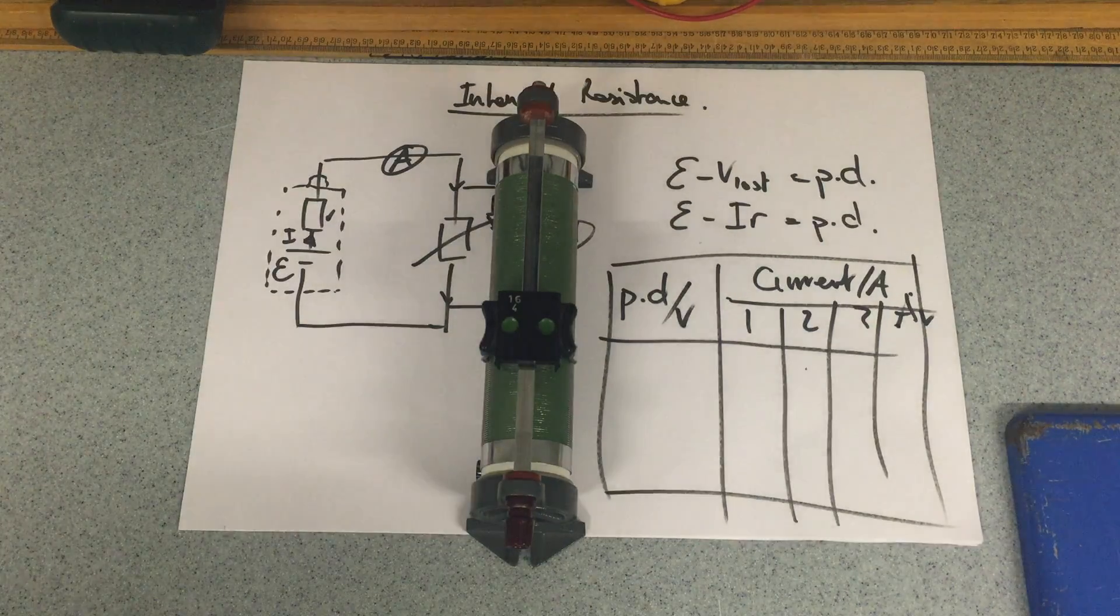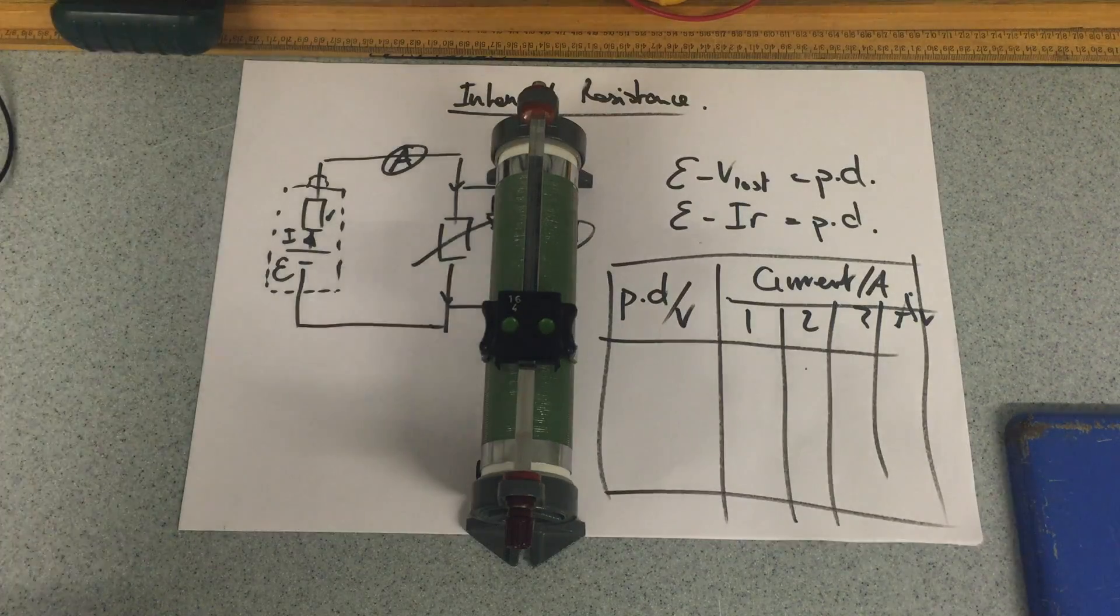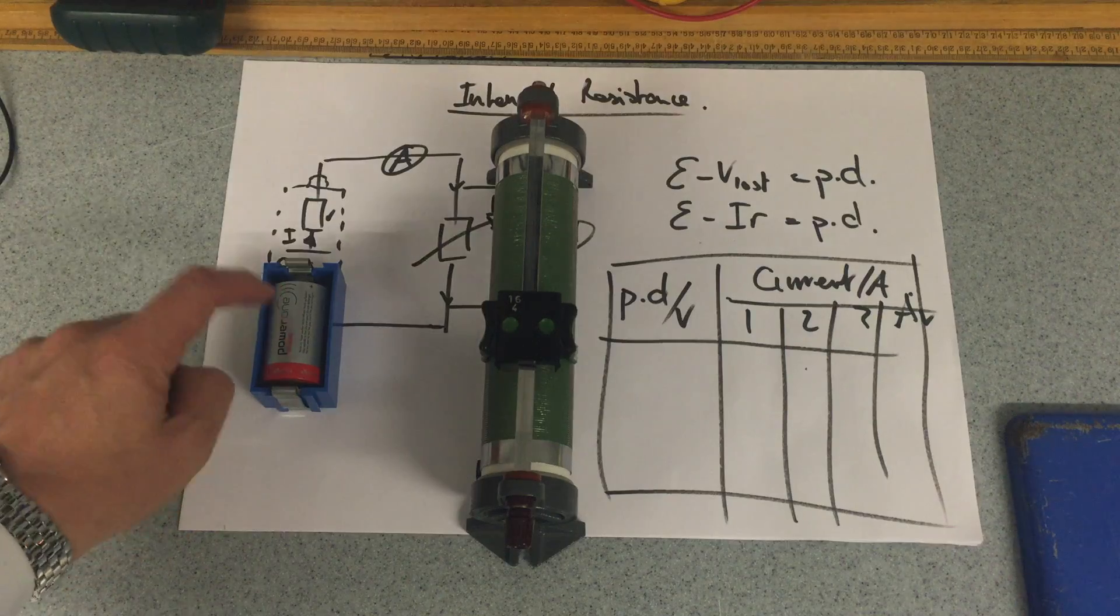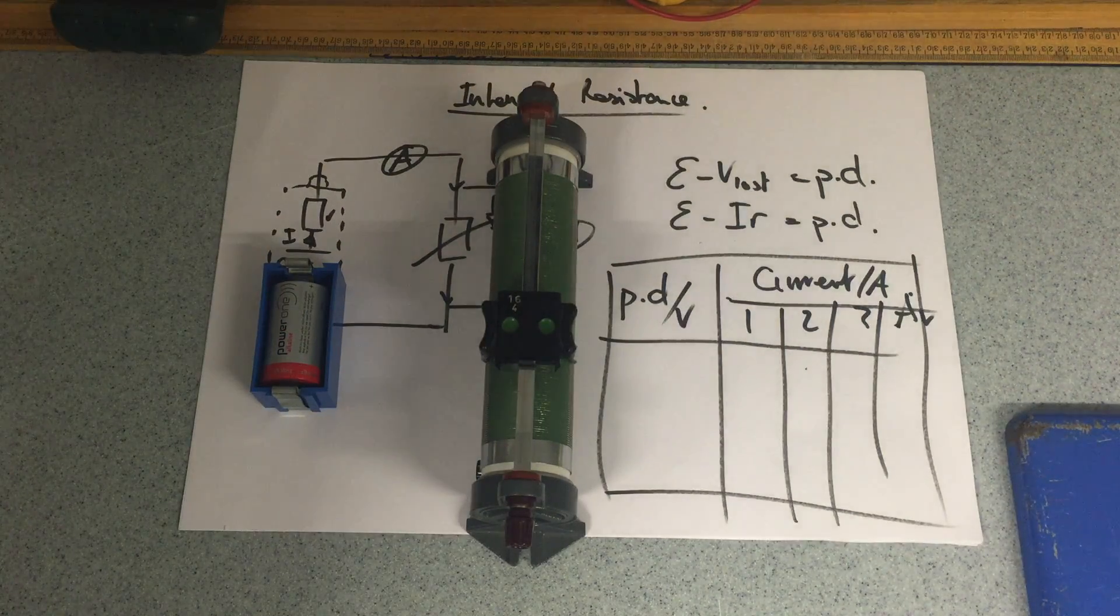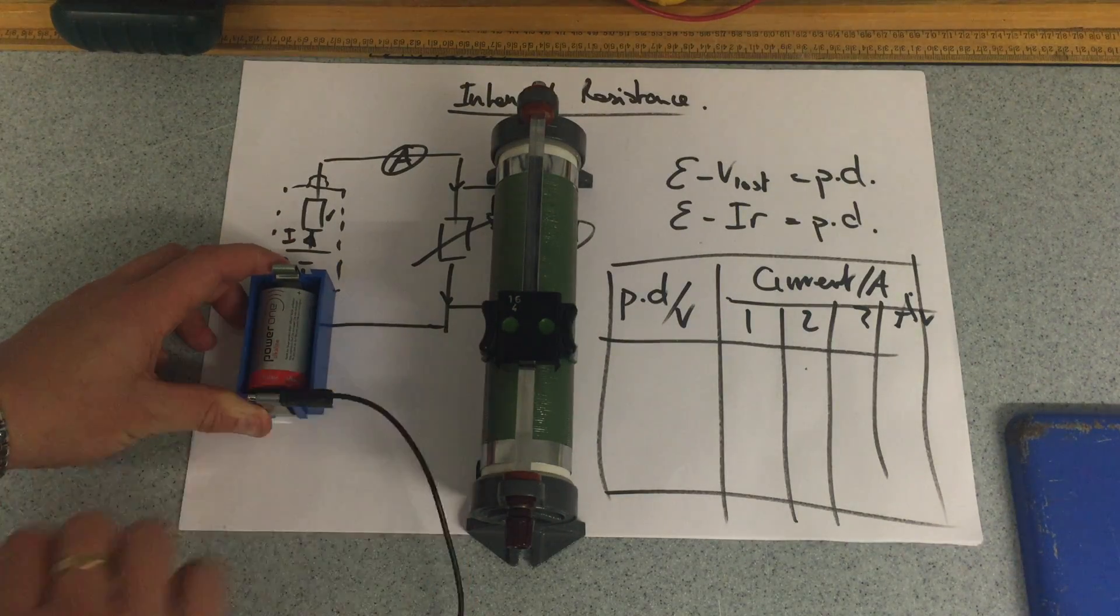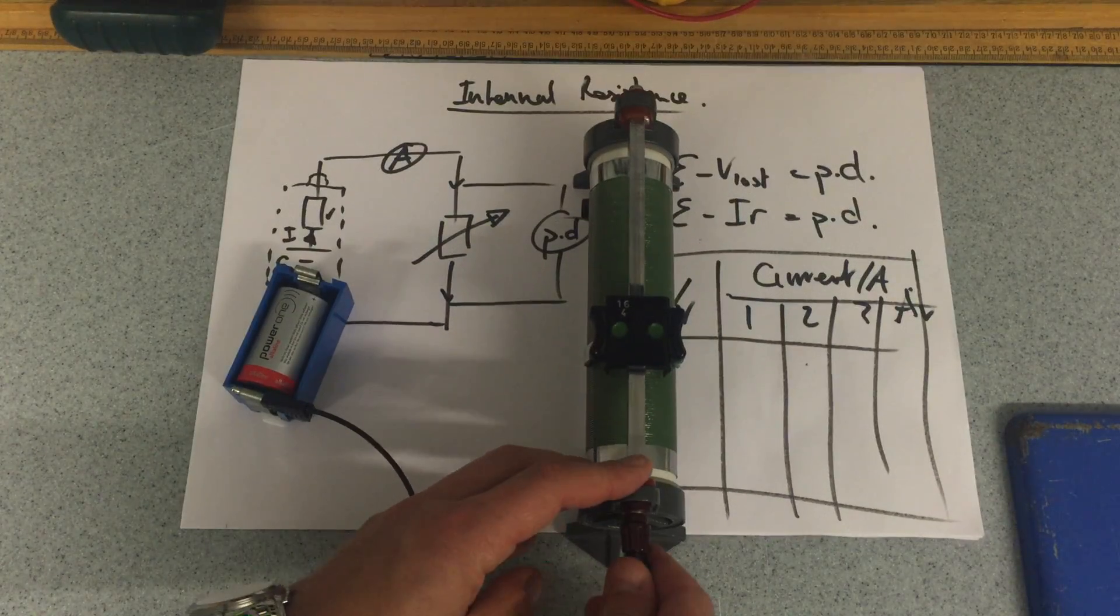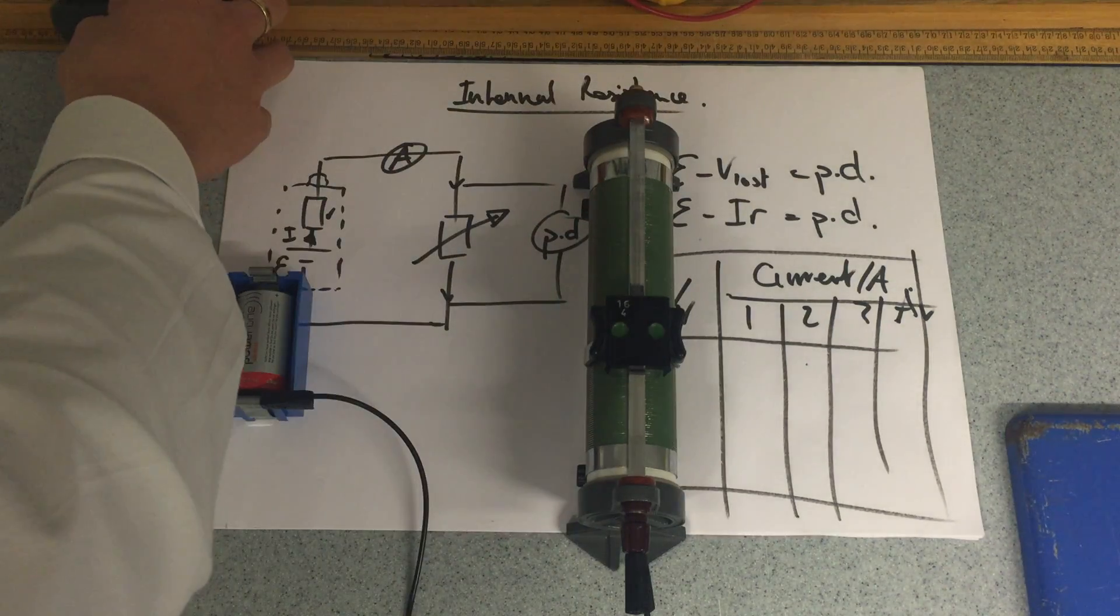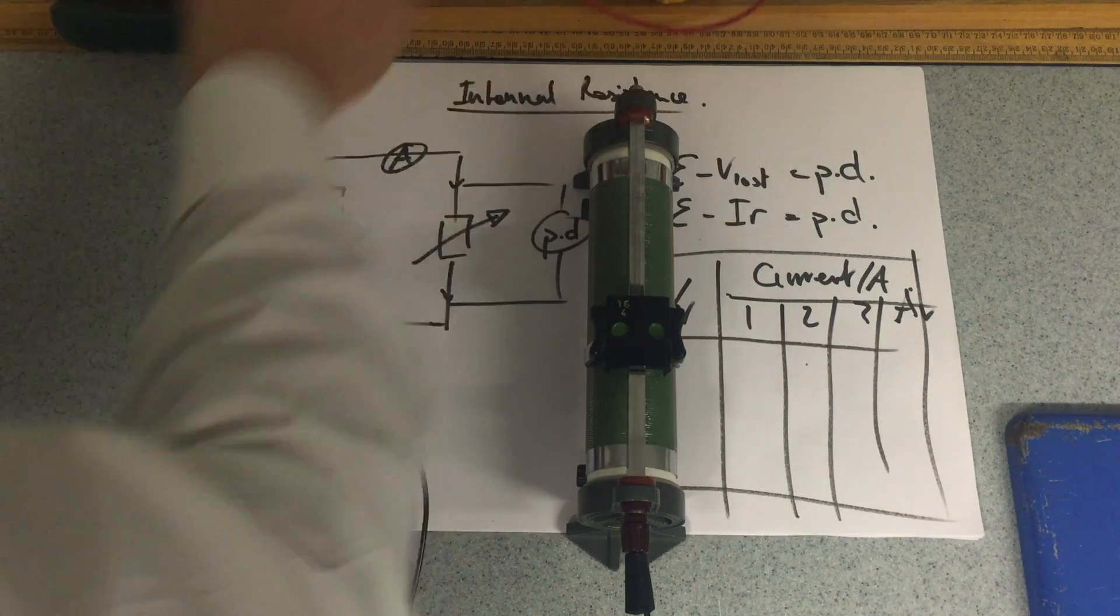And I'm going to plug into that a battery—should I say a cell—and that cell inside it has that internal resistance. And therefore I'm going to plug that in to here, to that point. Now I'm coming back out.